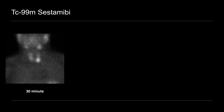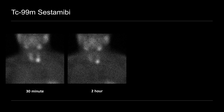This patient also had a technetium-99M sestamibi scan. Here we're looking at a coronal planar image 30 minutes after radiotracer injection. You can see normal salivary gland uptake bilaterally, also normal uptake in the right and left thyroid lobes. But then we see increased tracer at the left lower pole in the region of that parathyroid adenoma. On the two-hour delayed scan, the tracer has mostly washed out of the thyroid but is retained at the level of that parathyroid adenoma.